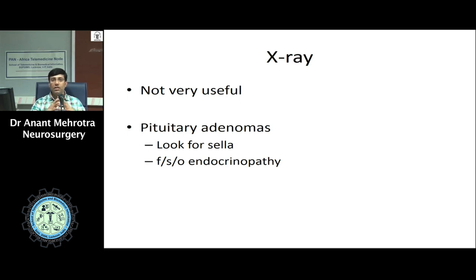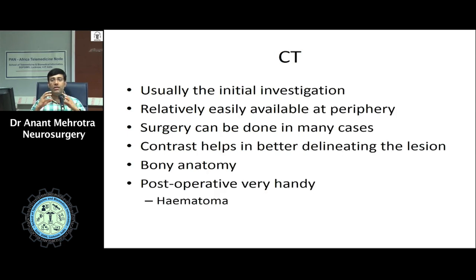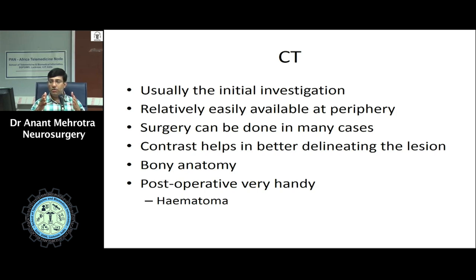If a tumor is present in the brainstem, the patient may develop weakness of all four limbs, sensory symptoms, and multiple cranial nerve involvement depending on the level of brainstem involved. For instance, a tumor in the midbrain may cause third and fourth cranial nerve palsy. Bilateral symptoms may also occur with brainstem involvement. Eye signs, particularly gaze palsies, are important signs of midbrain involvement, as gaze movements are primarily controlled by the midbrain.